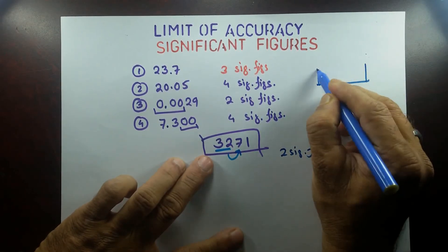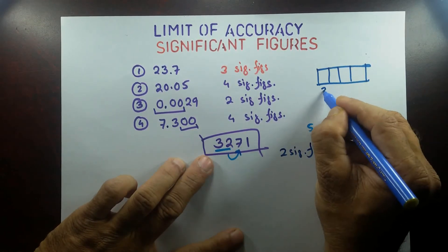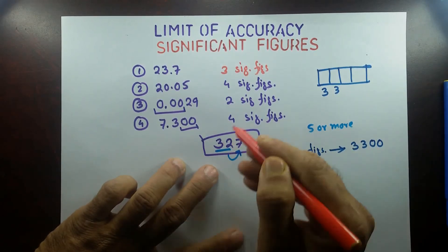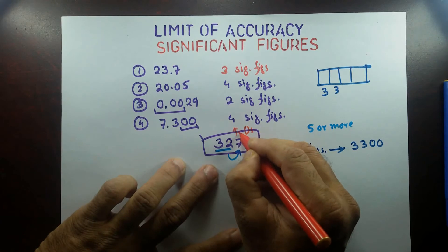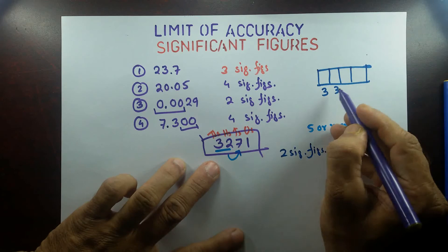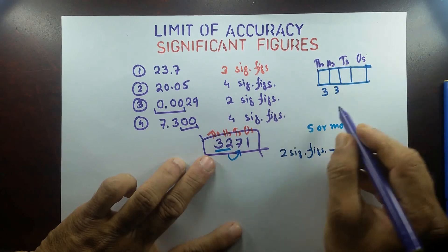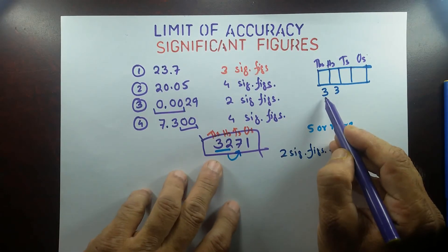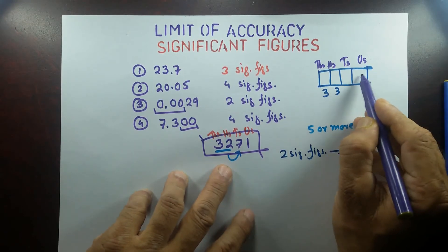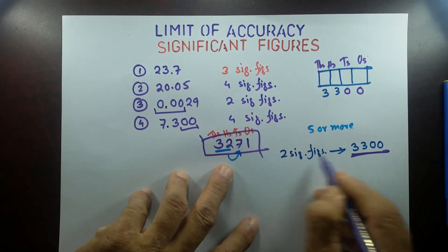You have to be careful with place value here. This is a four-digit numeral: ones, tens, hundreds, and thousands. The digit 3 is in the thousands place, the rounded digit 3 is in the hundreds place, and the tens and ones places are empty, so we put zeros there. So in two significant figures, 3,271 is written as 3,300. That's what it is.